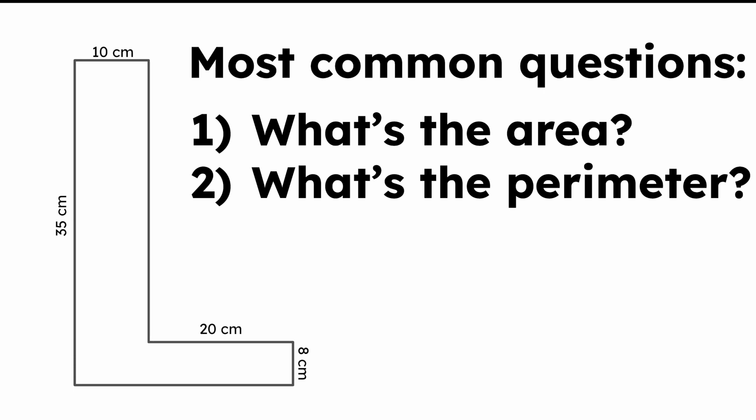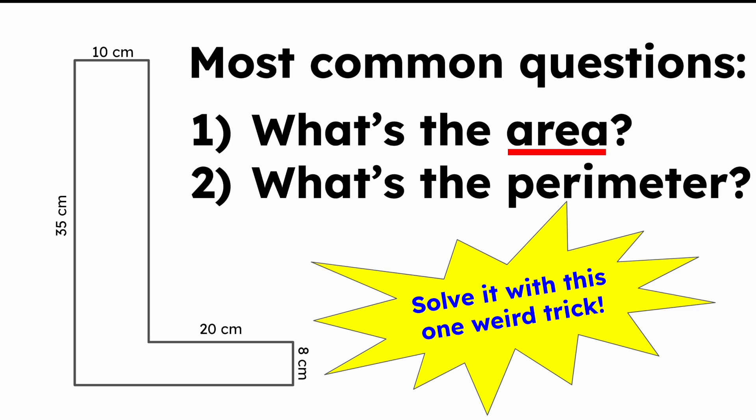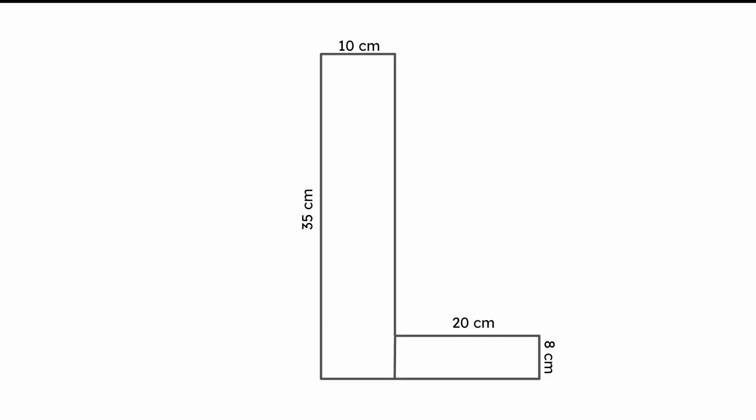Well, it turns out, especially with the first one, the area, that there is a pretty simple way to do it. There's like a trick that you can use that will make this not confusing anymore. It'll make it pretty simple. And that trick, ready? Are you watching carefully? You see that? You're just drawing a line. It's like magic. You take one shape and turn it into two shapes.